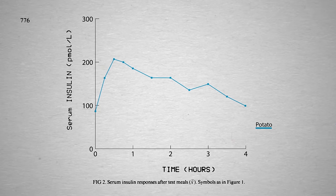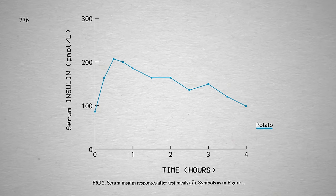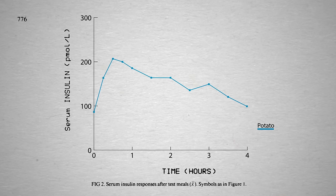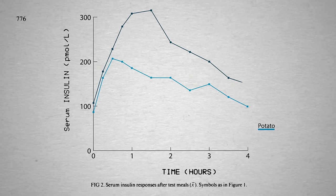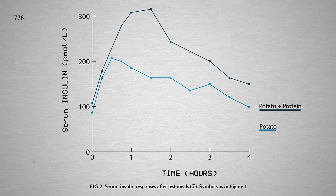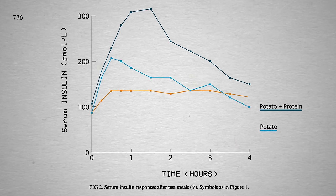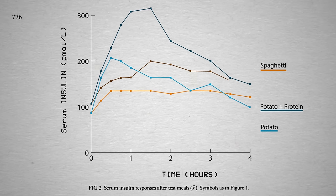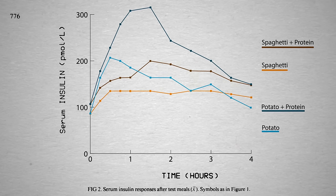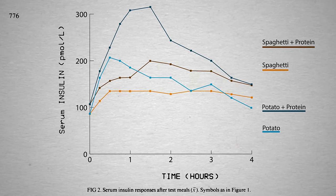Here's the insulin spike if you feed people mashed white potatoes. What would happen if you added some tuna fish? You get twice the insulin spike. The same with white flour spaghetti and white flour spaghetti with meat. The addition of animal protein may make the pancreas work twice as hard.